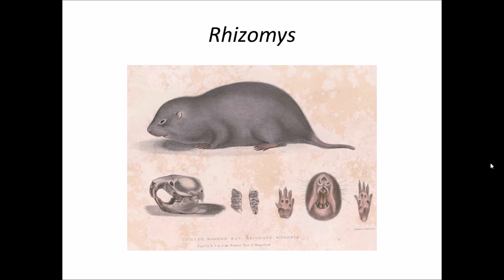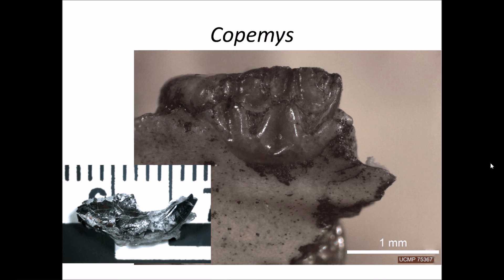Rhizomes was a mouse-like creature. It belongs to the family Rodentia which includes rodents like rat, mouse, squirrel, hamster, etc. Copemus also belongs to the family Rodentia which includes rodents like rat and mouse.